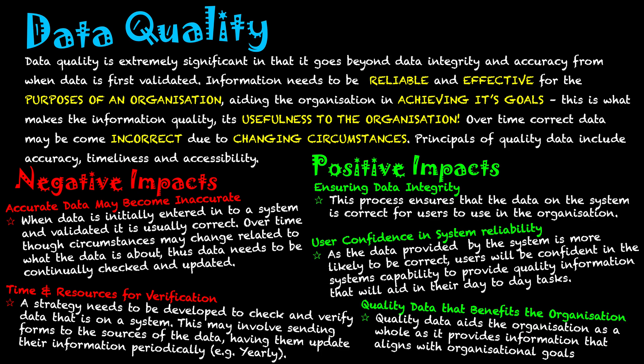Finally, quality data benefits the organization as a whole because it provides information that aligns with organizational goals. The system supports the organization by giving it quality information that is used for achieving organizational goals and making life easier for users completing their tasks. In summary, data quality means that the information coming out of a system is correct, stays correct over time, is easily accessible to users regardless of their circumstances, and aids them in achieving organizational goals.